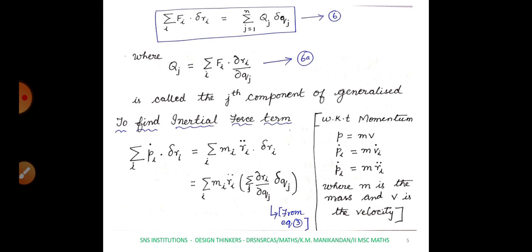We write this as capital Qj. Therefore summation i fi·delta-ri = summation j from 1 to n of Qj·delta-qj — call this equation 6. Here Qj = summation i fi·(∂ri/∂qj) is called the j-th component of the generalized force.